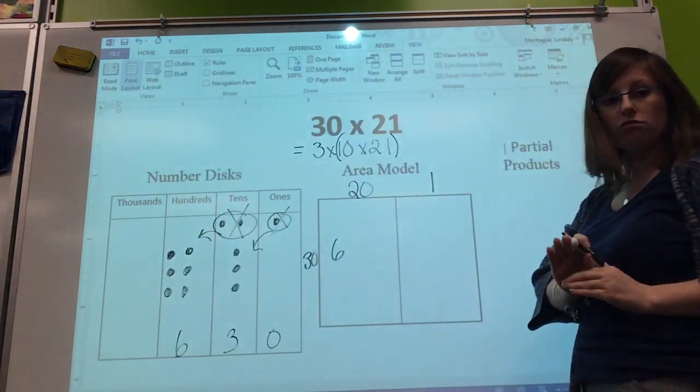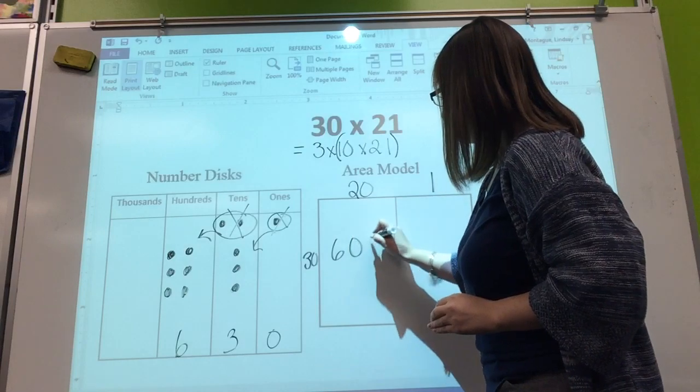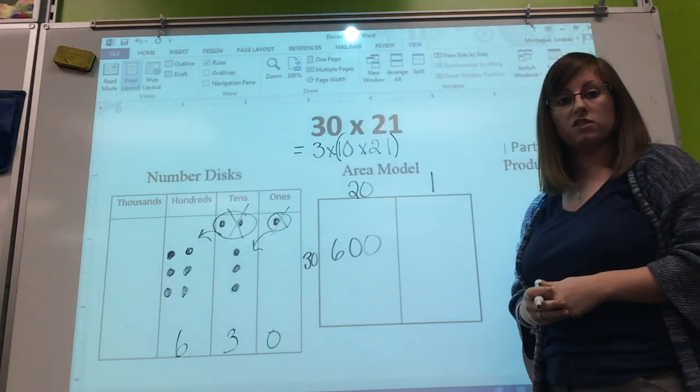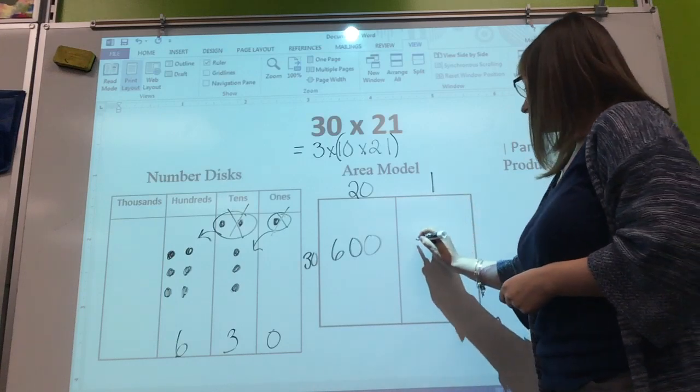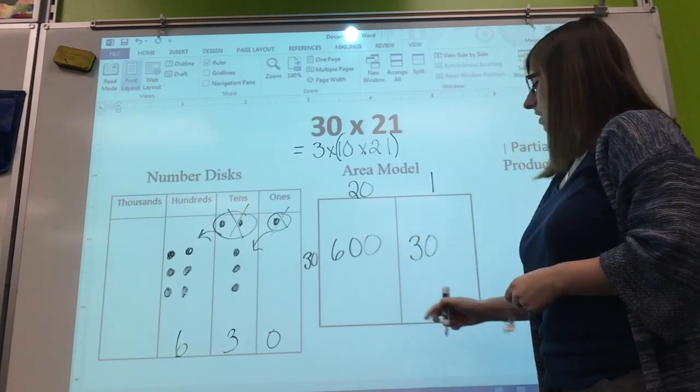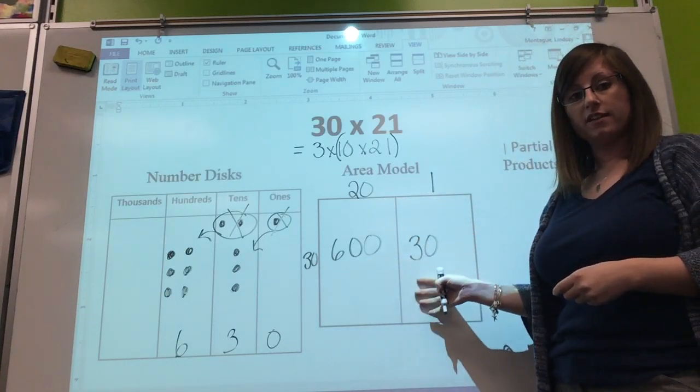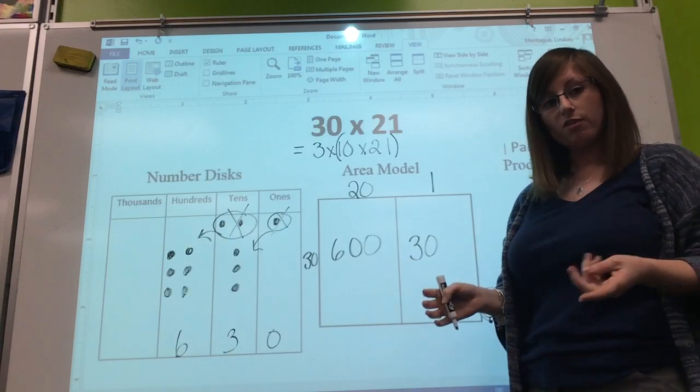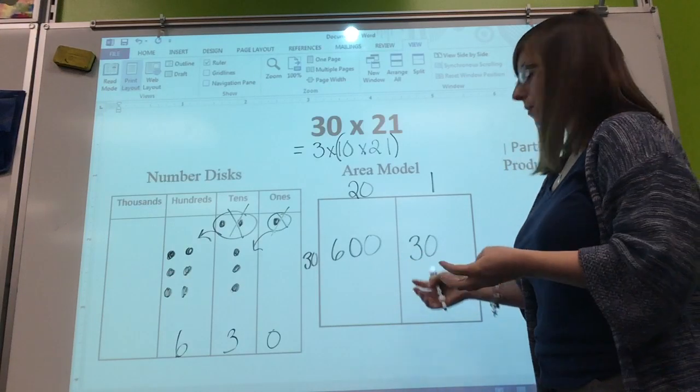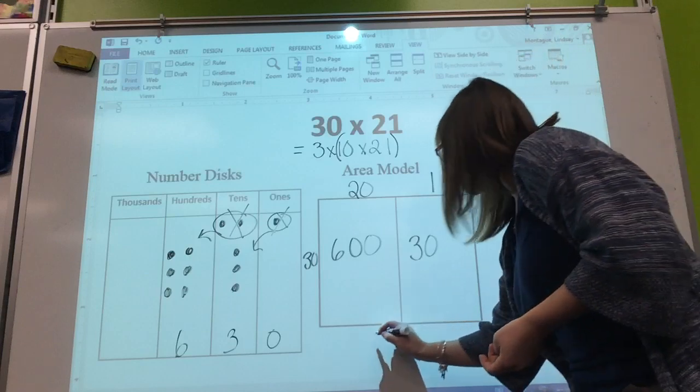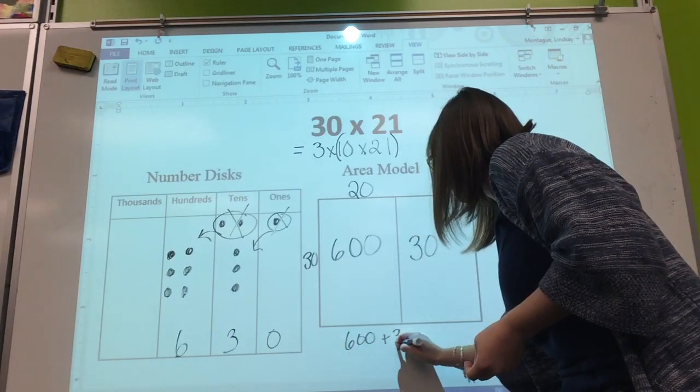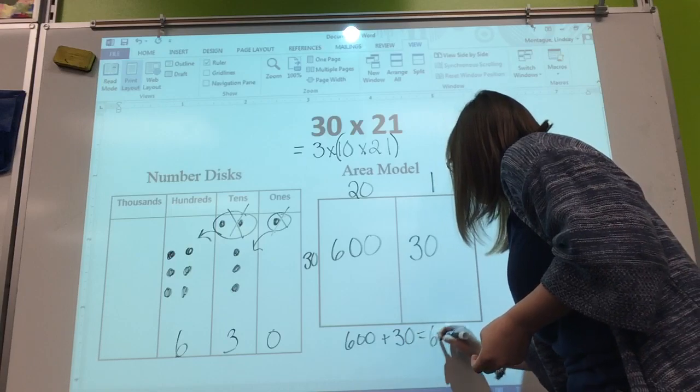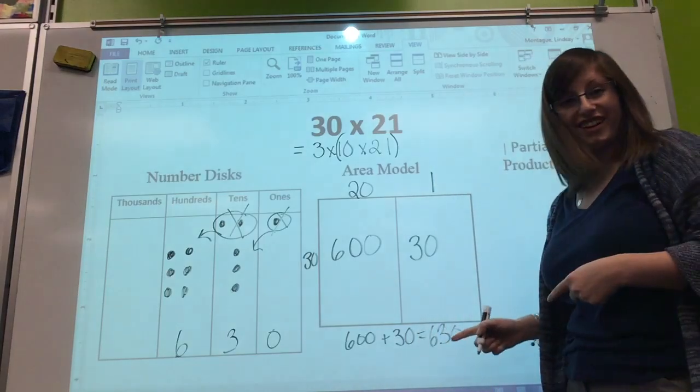If I look at how many zeros I'm covering up - 1, 2 - so I'm going to add 1, 2 zeros to my answer, so it's 600. And then 30 times 1 is 30. Now I'm going to take these parts of my answer, which if you remember from another video is our partial products, and I'm going to add them together. 600 plus 30 equals 630. We've got the same answer from two different strategies.